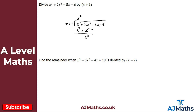From here we bring down the next term, minus 5x, so we now have x squared minus 5x. We repeat the same process: x squared divided by x gives plus x. We then take that plus x and multiply it by the divisor: x times x gives x squared, and x times 1 gives plus x.